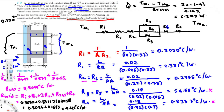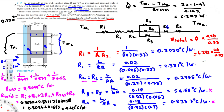To find the total heat transfer for the full 4 m × 6 m wall, we scale up: Q_dot_total = Q_dot × (4 × 6) / 0.33 = 6.273 × 24 / 0.33 = 456 W. That is the total rate of heat transfer through the wall. That's how we solve this type of problem.